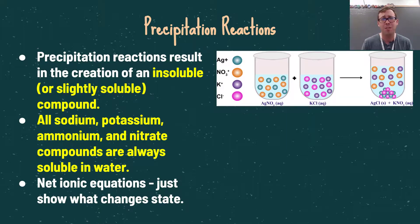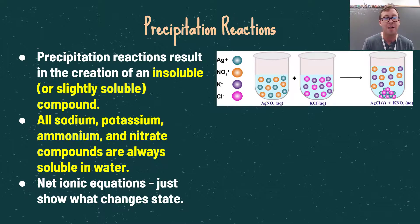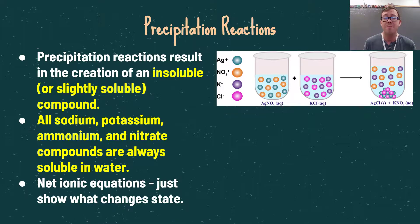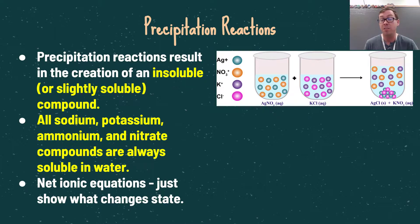The last type of reaction is a precipitation reaction. Precipitation reactions result from the creation of insoluble or slightly soluble compounds. A couple of things to remember: all sodium, potassium, ammonium, and nitrate compounds are always soluble in water, so they will always be aqueous. For precipitation reactions, we want to look at net ionic equations and identify just what changes state.